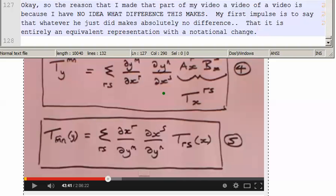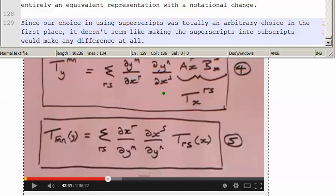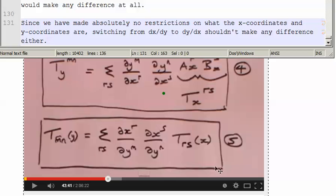Okay, so the reason I made that part of my video a video of a video is because I have no idea what difference this makes. My first impulse is to say that whatever he just did makes absolutely no real difference. That is, that it is entirely an equivalent representation with just a notational change. Since our choice in using superscripts was totally an arbitrary choice in the first place, it doesn't seem like making the superscript into subscripts would make any difference at all. Since we have made absolutely no restrictions on what the x coordinates and y coordinates are, switching from dx dy to dy dx, dy over dx shouldn't make any difference either.